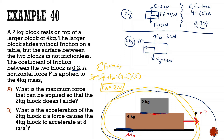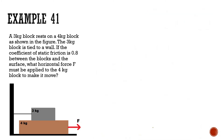Part B: what is the acceleration of the two kilogram block if a force causes the four kilogram block to accelerate at 3 meters per second squared? Now if the bottom box is accelerating at 3 meters per second squared, the top block is going to try to hold on, but it can only accelerate at 2 meters per second squared — that's the maximum friction allows. So it will start to slide off because it's not as quick as the bottom one, which is going at 3 meters per second squared.